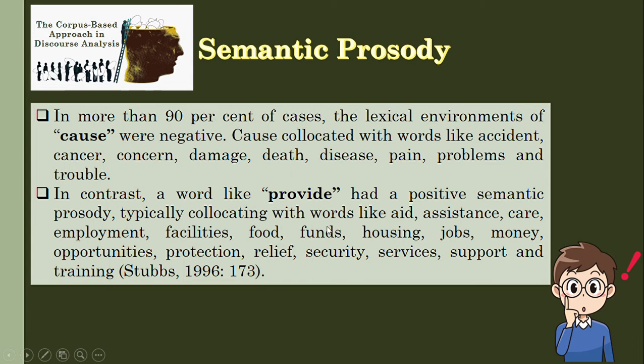In contrast, the word 'provide' has a positive semantic prosody or positive aura, because it is typically collocated with words like aid, assistance, care, employment, facilities, food, funds, housing, jobs, money, opportunities, protection, relief, security, services, support, and training.